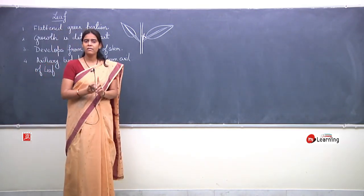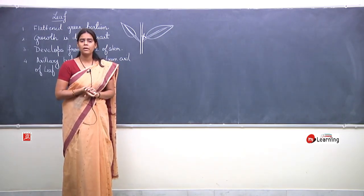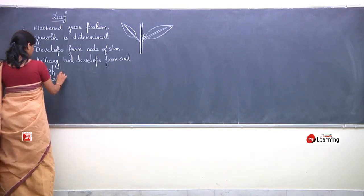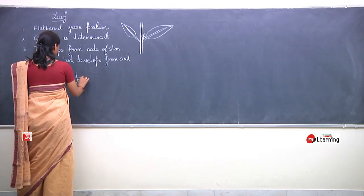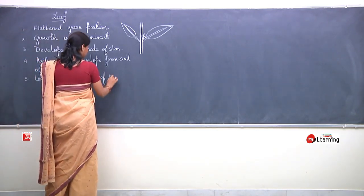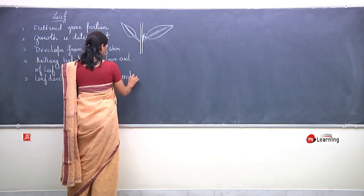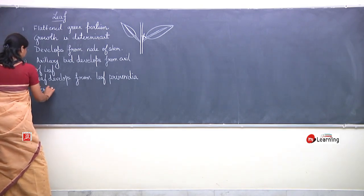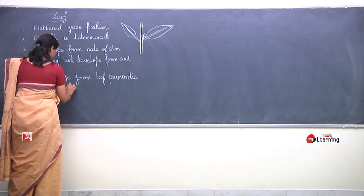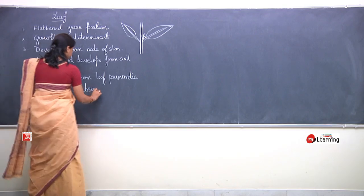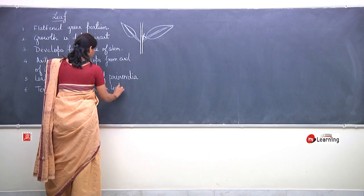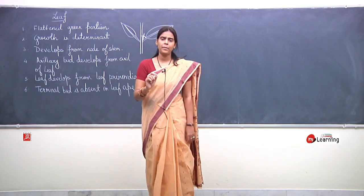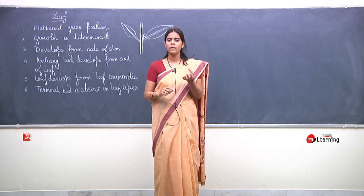Leaf hamesha leaf primordia se develop hoti hai, aur is ke apex pe kabhi bhi terminal bud ka production nahi hota. Leaf develops from leaf primordia. Terminal bud is absent on leaf apex.